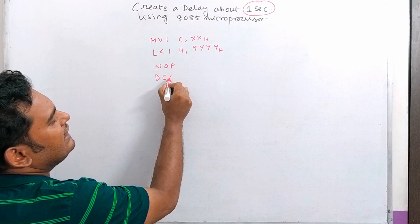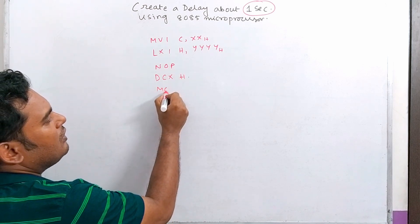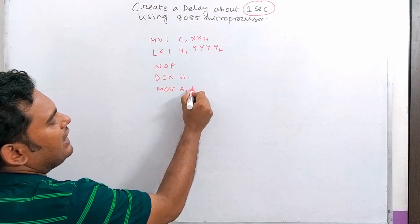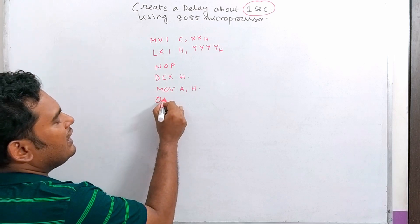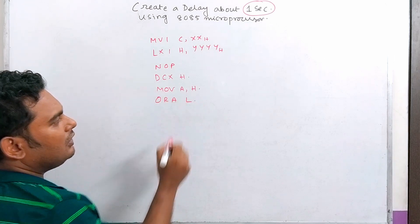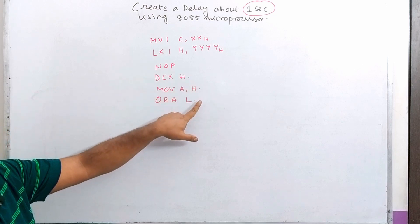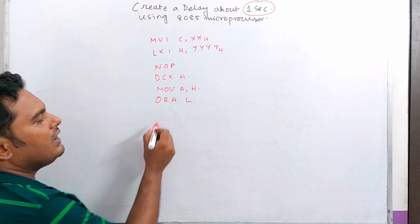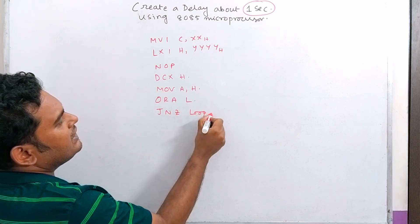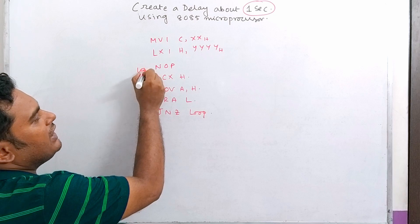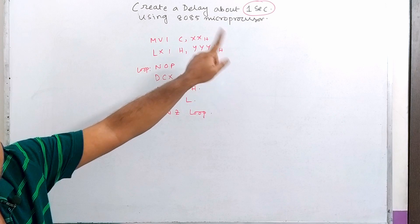Now we have DCXH — decrement register pair. Then we have MOV A,H — move higher byte to accumulator. Then ORA L — OR accumulator with L register. And then register pair, so we use DCXH followed by ORA L, and there comes JNZ loop. NOP is at the same position, and it loops Y times continuously.